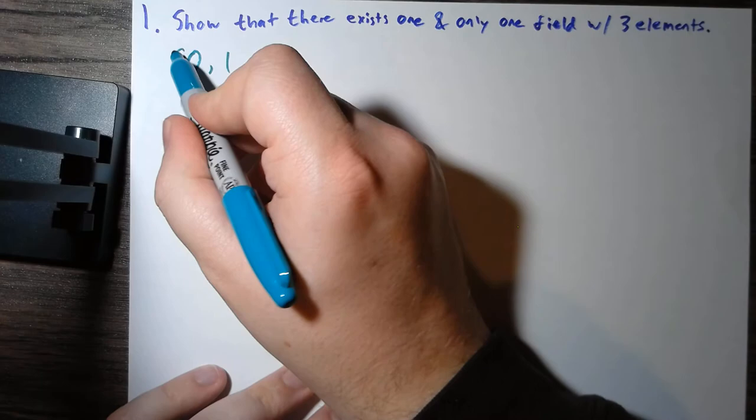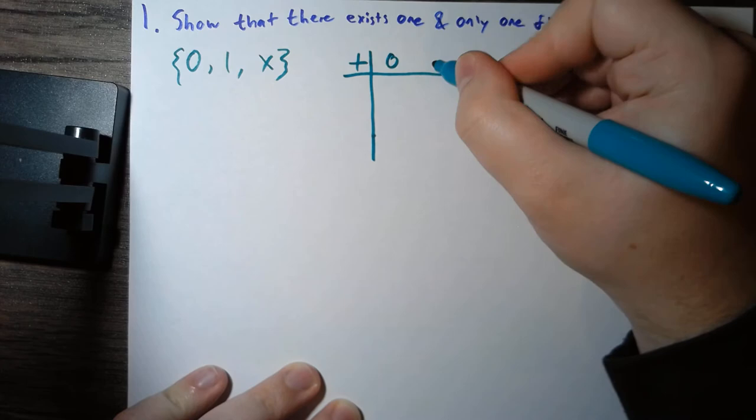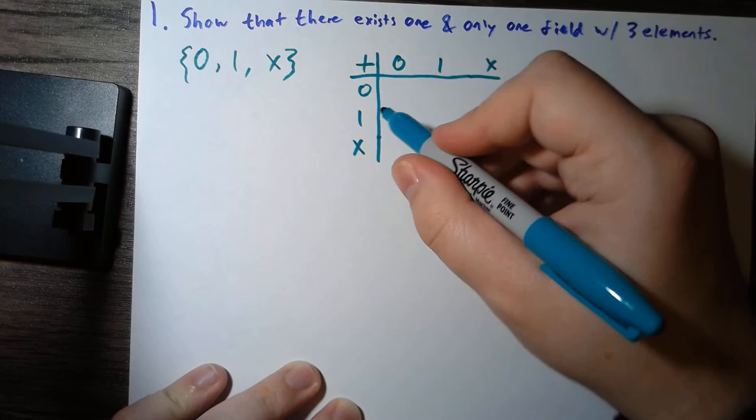And so these will be our elements and let's see how they obey under addition. So if we think about how these guys have to obey under addition, well zero added with anything has to be zero.